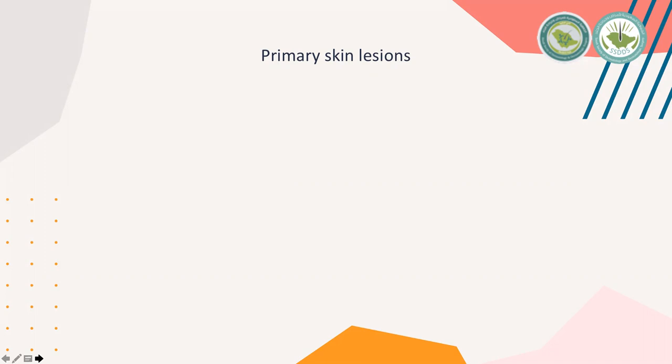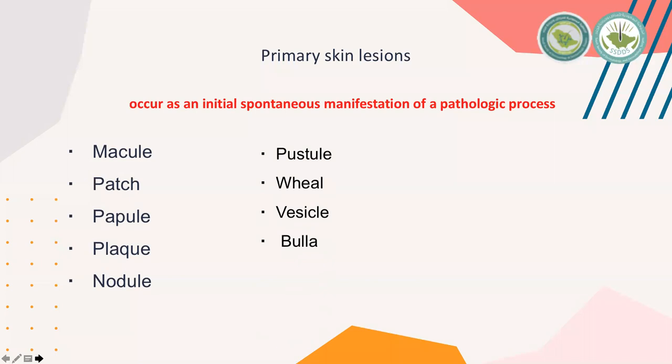Examples of primary skin lesions are macule, patch, papule, plaque, nodule, pustule, wheal, vesicle, and bulla. We will talk about each of them in the next slide.